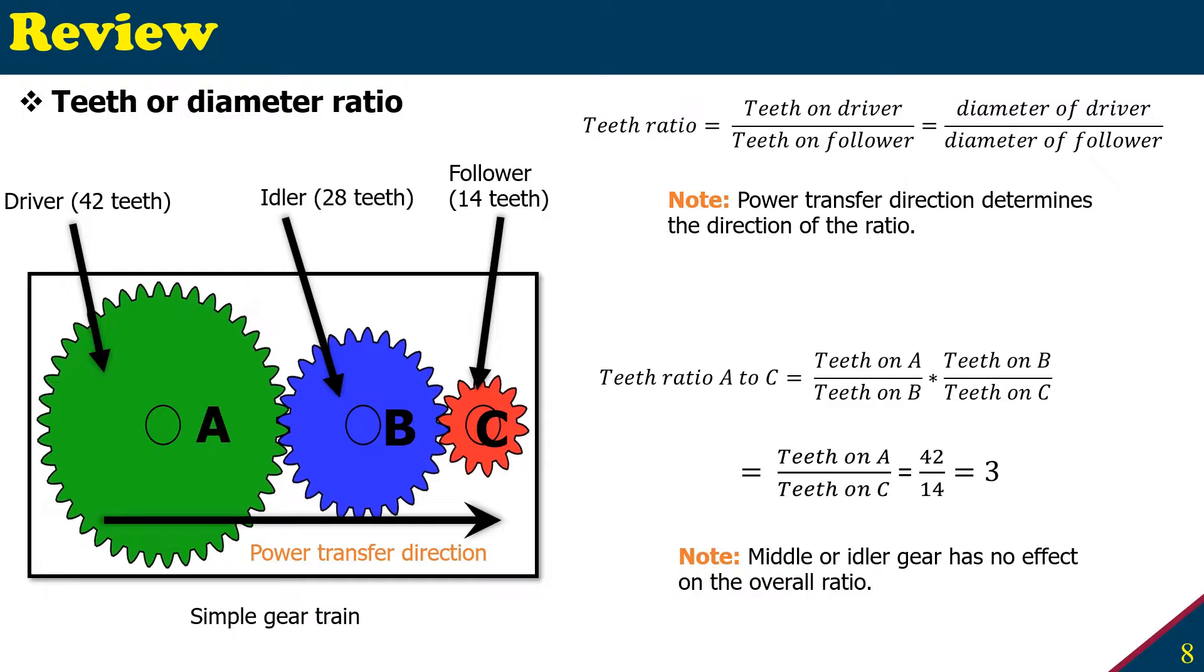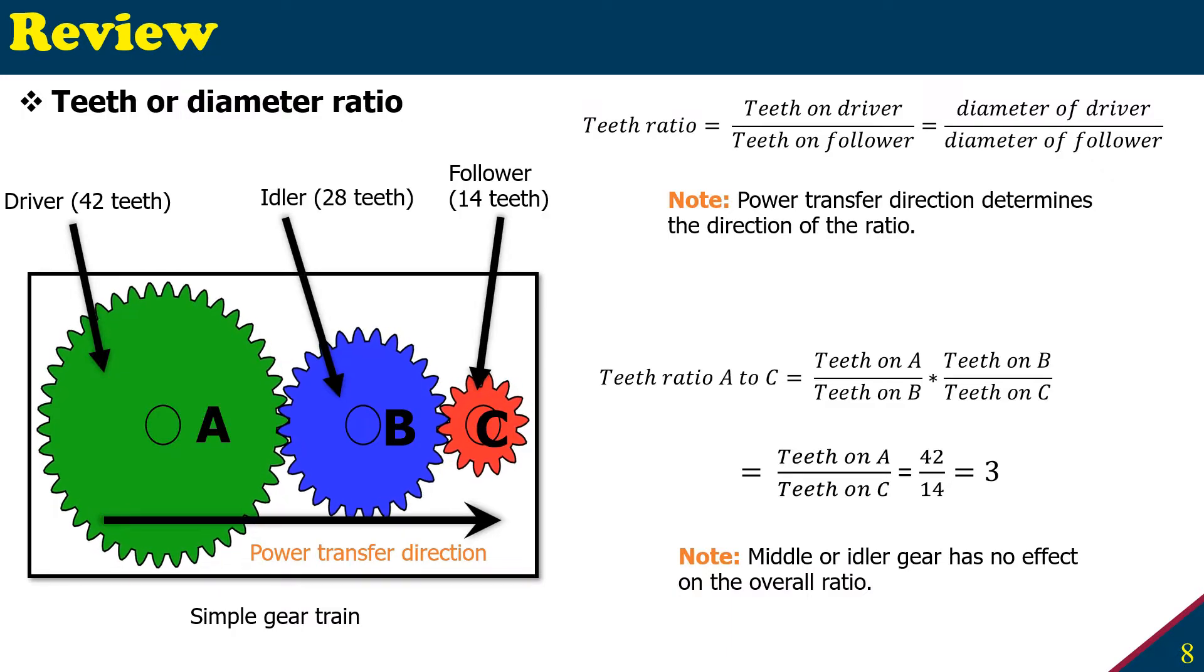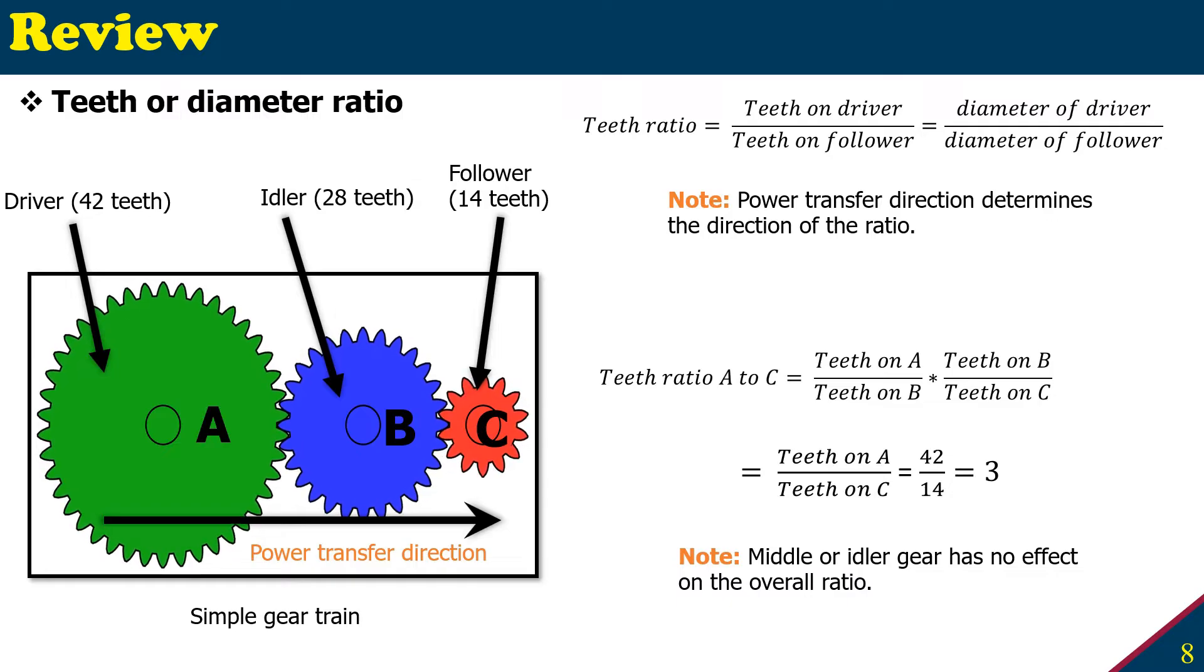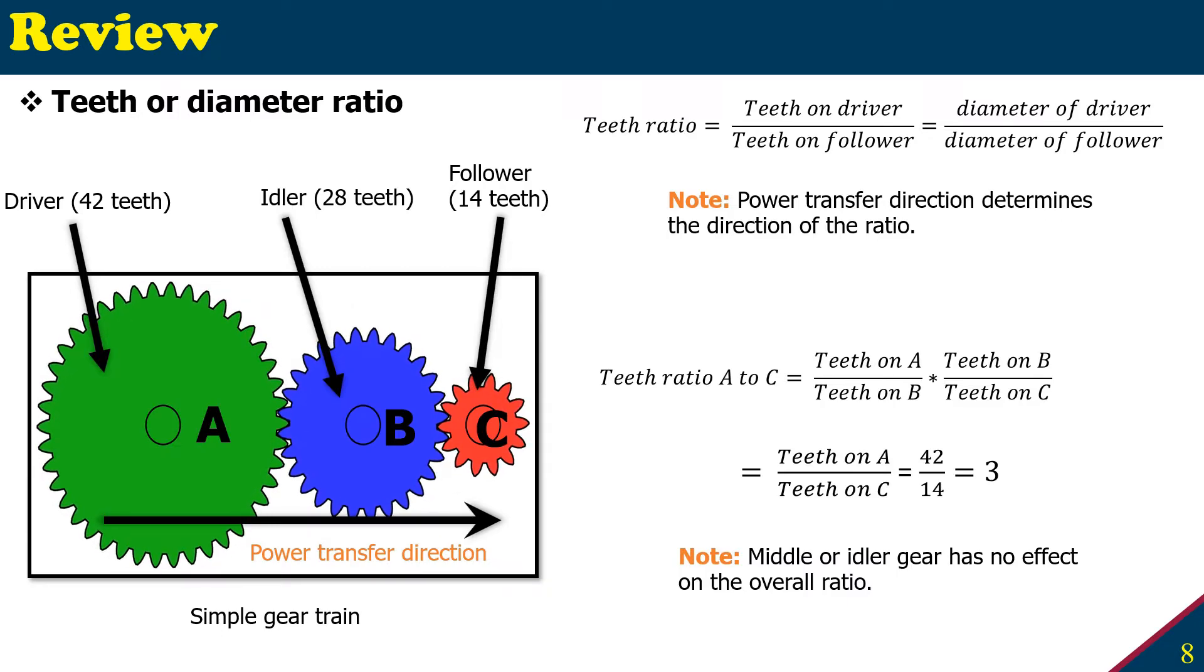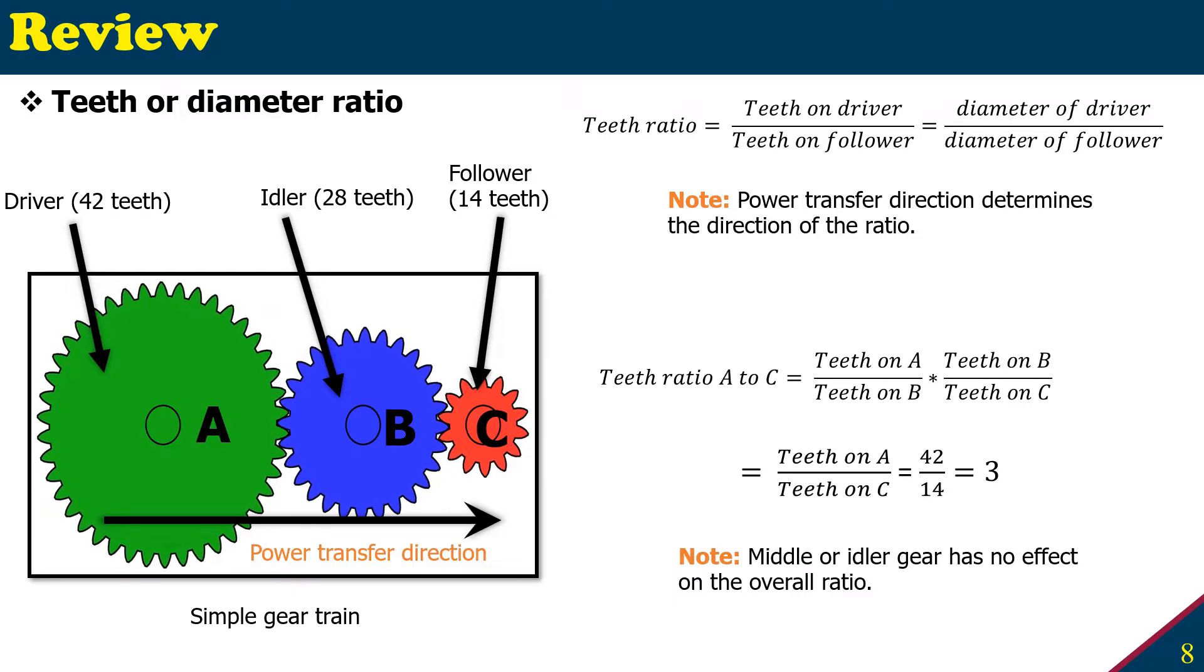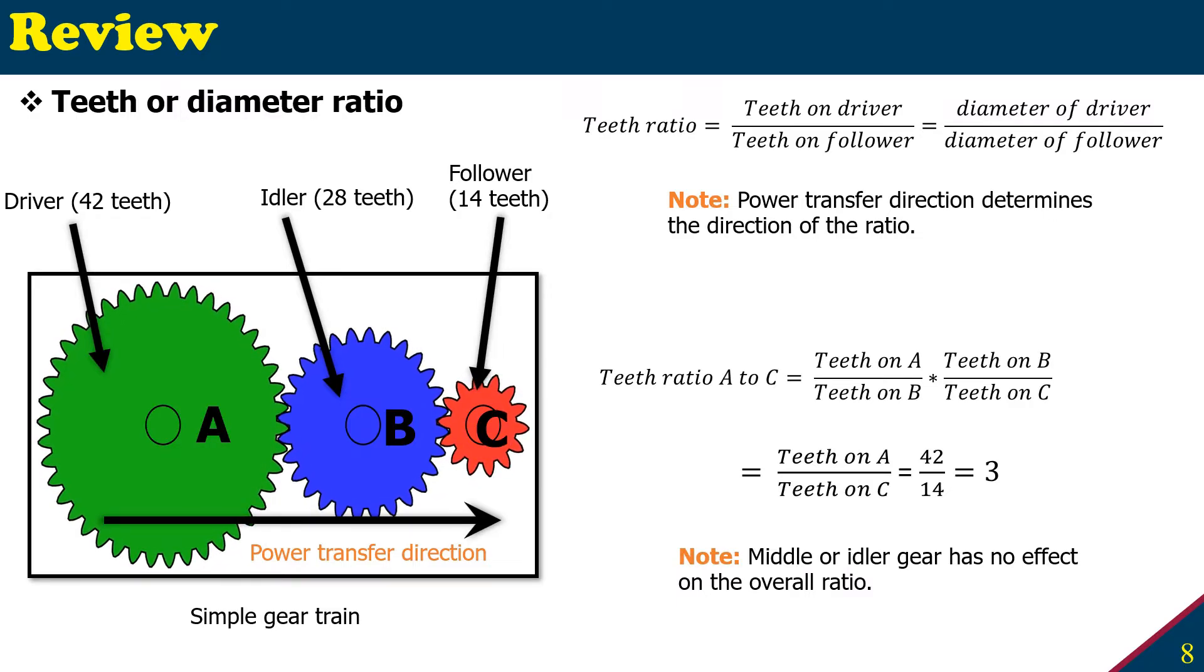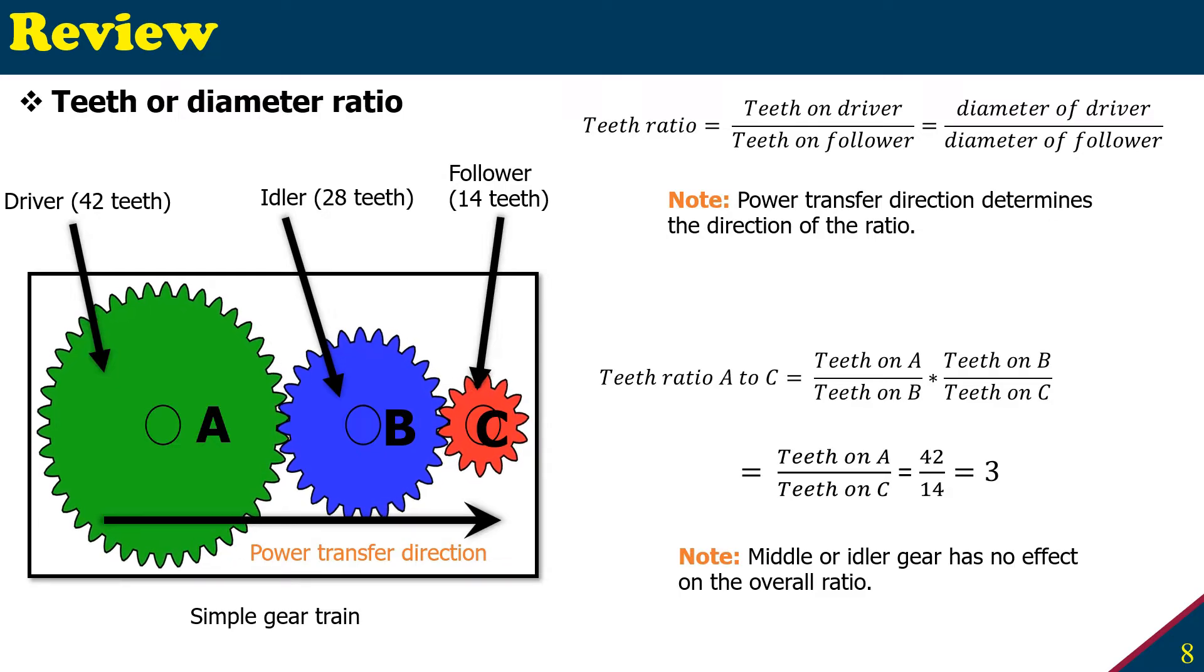So the teeth ratio from A to C would be the multiplication of A to B and B to C. From A to B, the teeth on A the driver is 42, and the teeth on B is 28. Again, teeth on B would be 28, and teeth on C will be 14. So teeth on B and teeth on B will cancel out, so the final ratio would be teeth on A and C, so 42 over 14, just 3. So the teeth ratio for this simple gear train arrangement is 3.